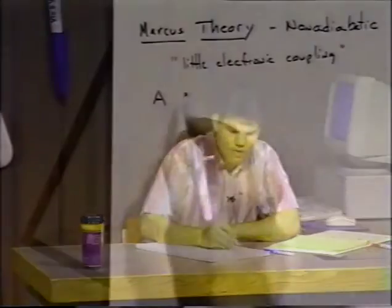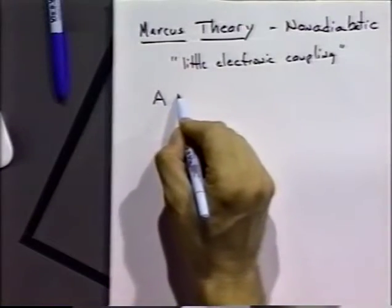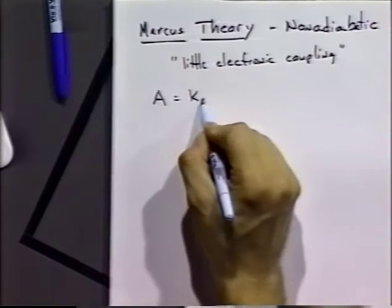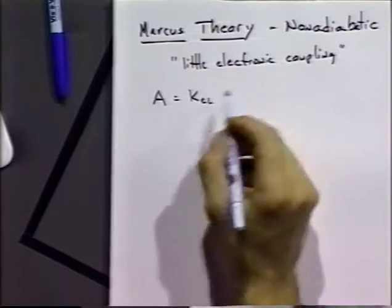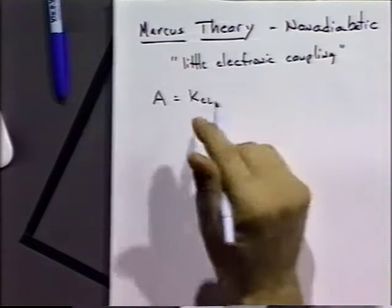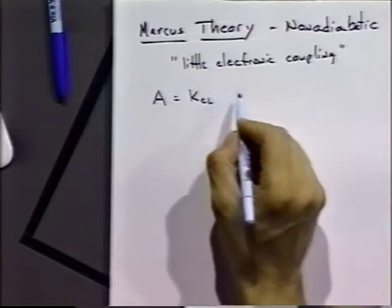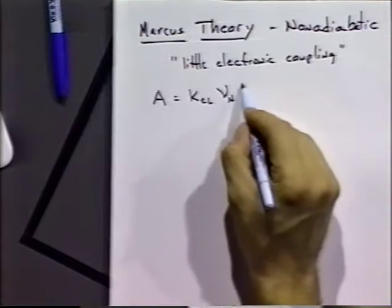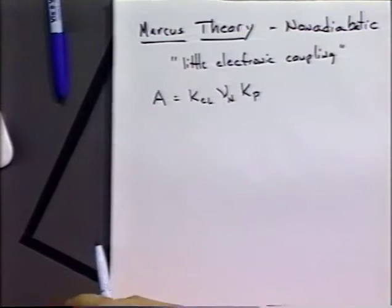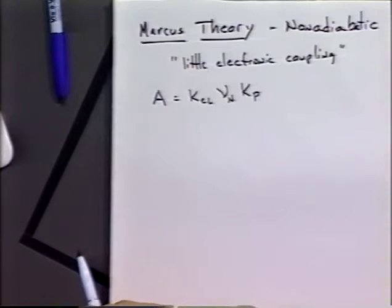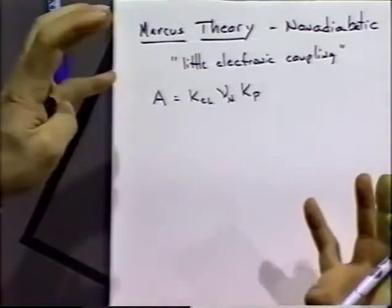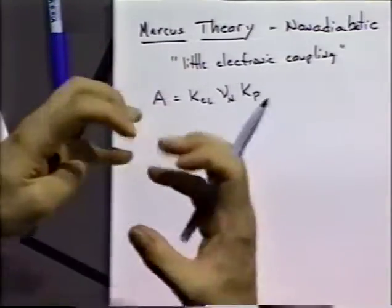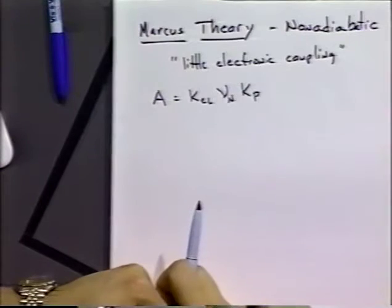The basic theory has an activation factor and a pre-exponential factor, which we indicate as being equal to kappa — the electronic transmission coefficient — times a nuclear frequency factor, times a pre-equilibrium complex term. In other words, the electrode and the molecule have to get together, or two molecules have to get together, to form an equilibrium complex.